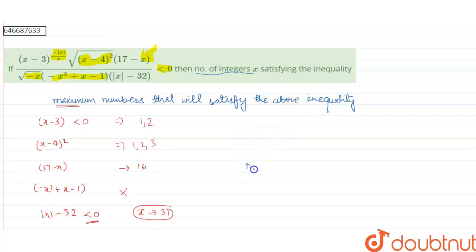That means number of integers x satisfying the above inequality will be 31.